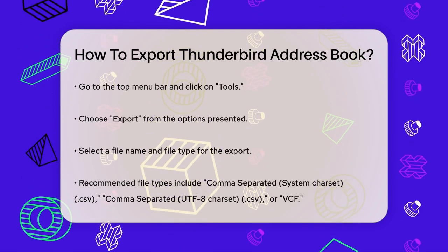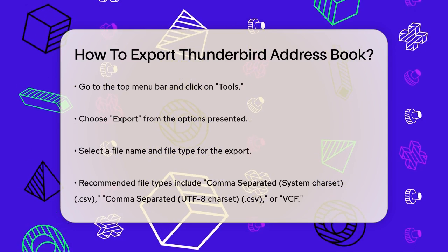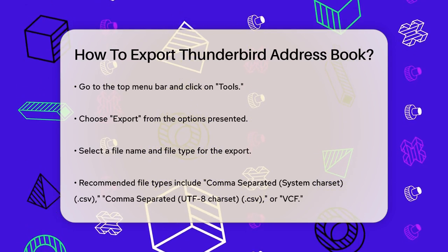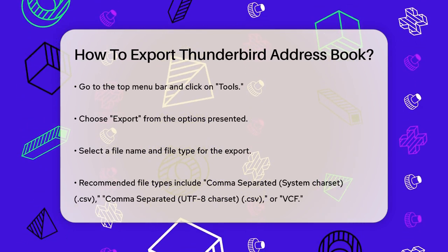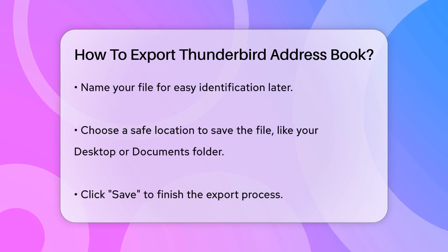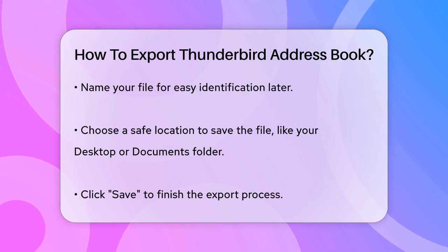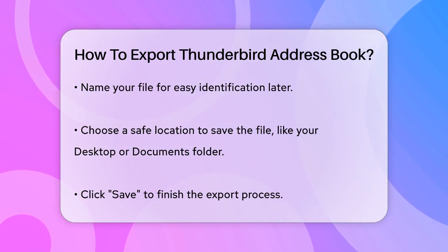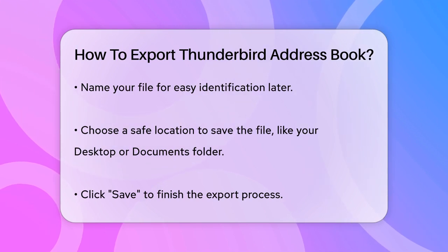This will prompt you to choose a file name and file type. Make sure to select either comma-separated systemcharset.csv, comma-separated utf8charset.csv, or you can choose VCF if that's what you prefer. Name your file sensibly so you can easily find it later, and choose a safe location to save it, such as your Desktop or Documents folder.